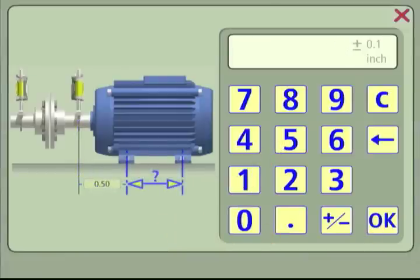The second dimension is the distance between the front and back feet of the movable machine. Enter the value and touch OK.